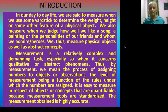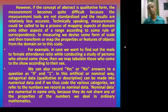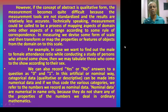Measurement is a relatively complex and demanding task, especially when it concerns qualitative or abstract phenomena. By measurement, we mean the process of assigning numbers to objects or observations, the level of measurement being a function of the rules under which the numbers are assigned. It is easy to measure quantifiable concepts because measurement rules are standardized and the measurement obtained is highly accurate. Technically, measurement could be called a process of mapping aspects of a domain onto other aspects of the range according to some rule of correspondence. We devise some form of scale and then map the properties of objects from the domain onto the scale.